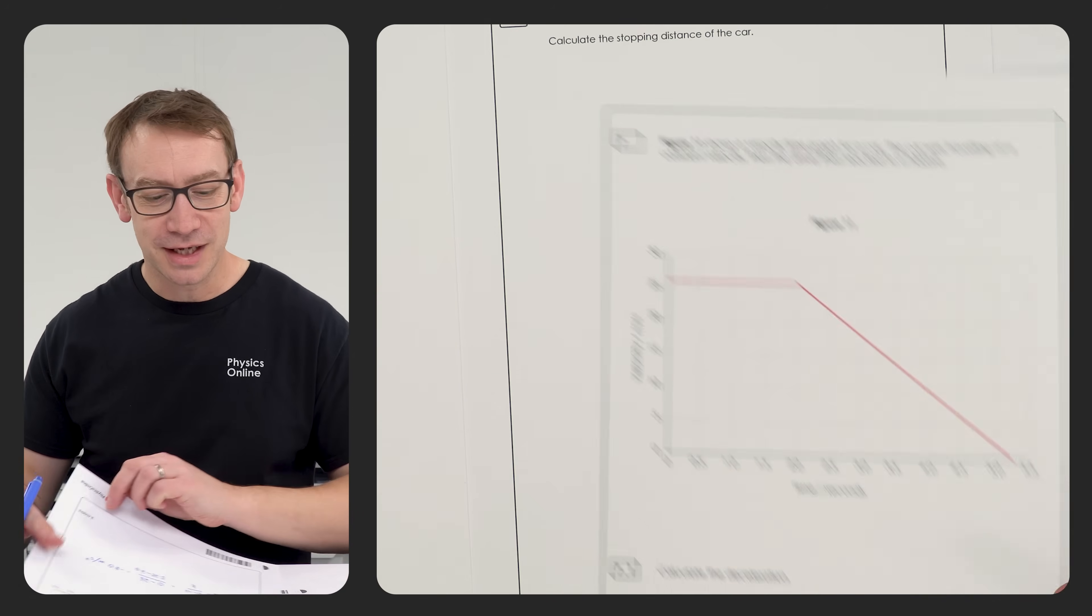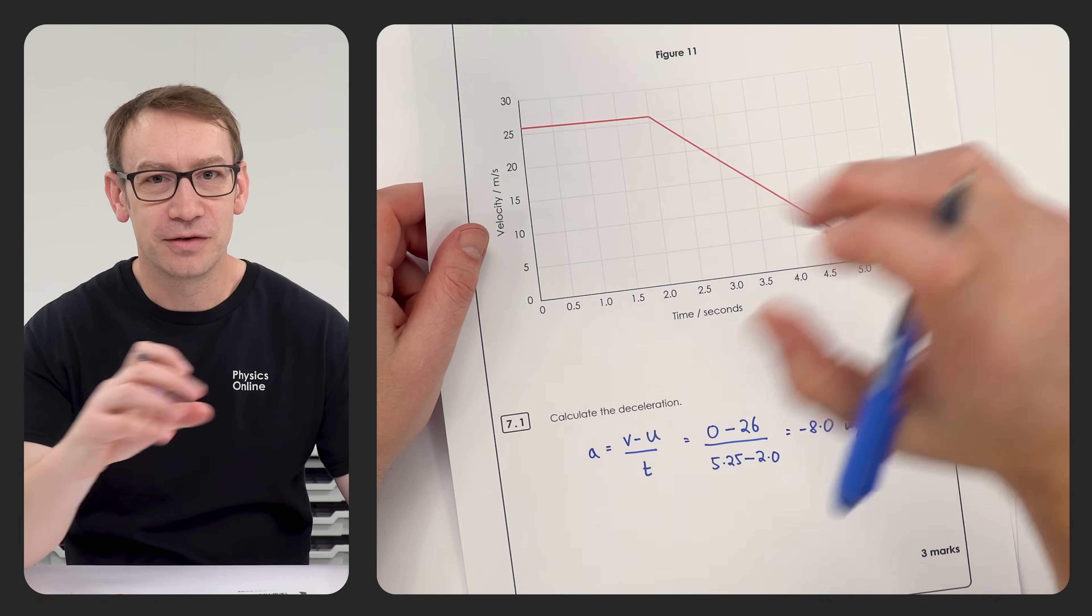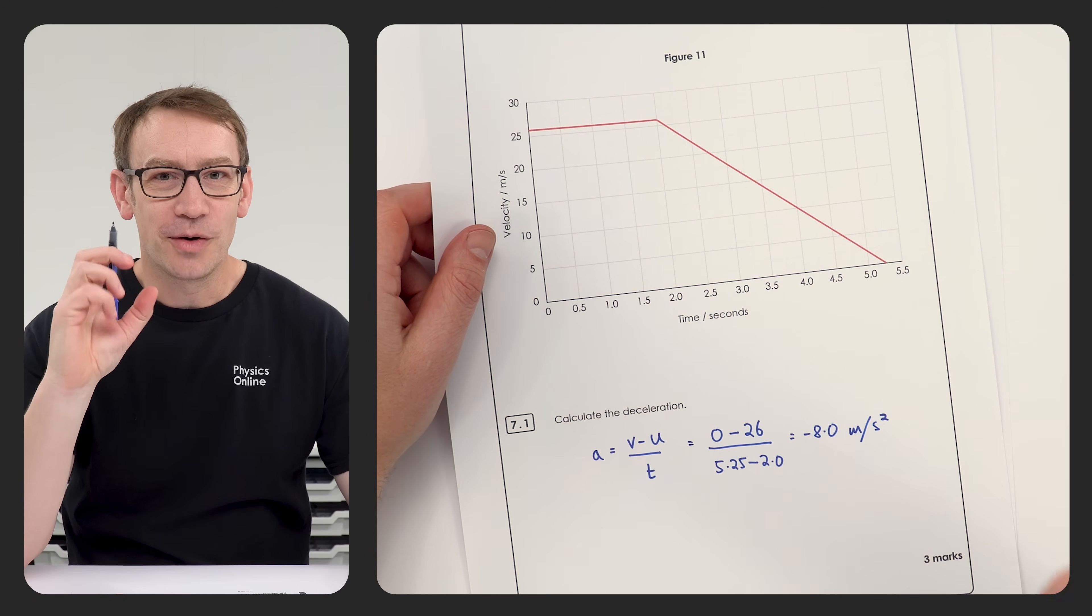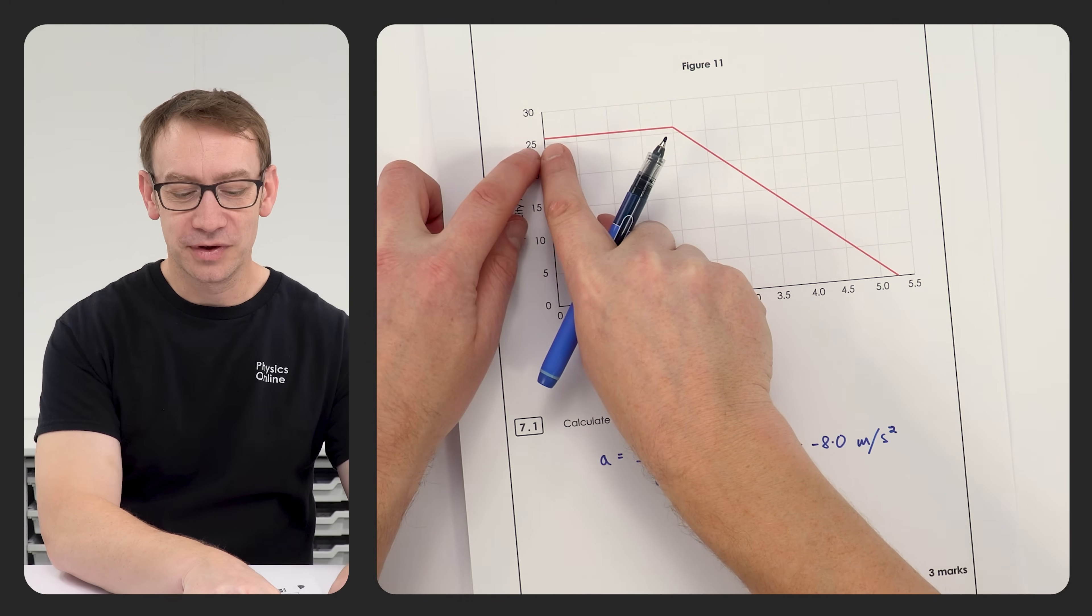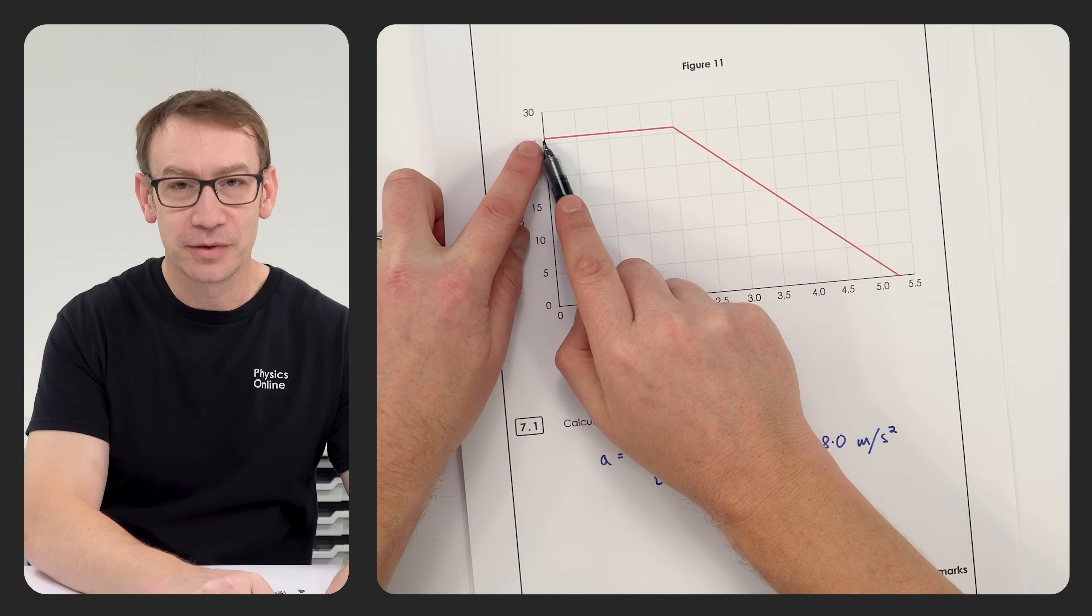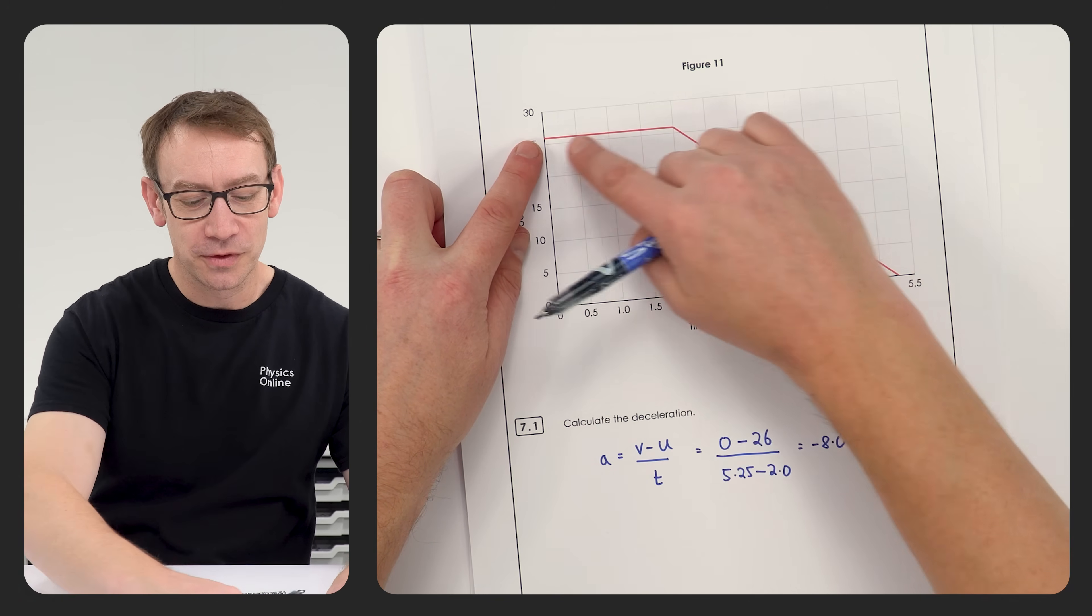The next part here was worth five marks and only five percent of the students got five marks for this. Now I think the reason is the way that the question was worded made it look like this was the time when they saw the hazard, they then had this certain kind of reaction time which was going to be equal to our thinking distance.